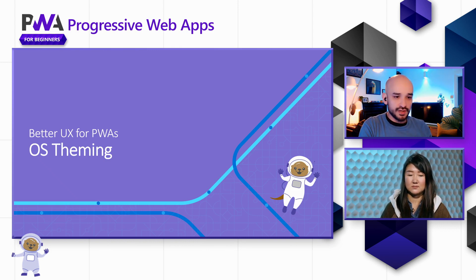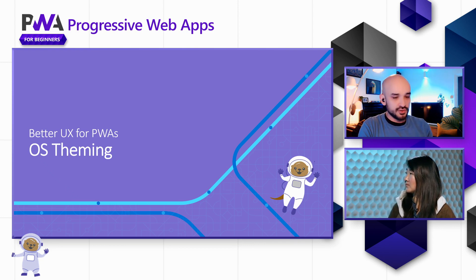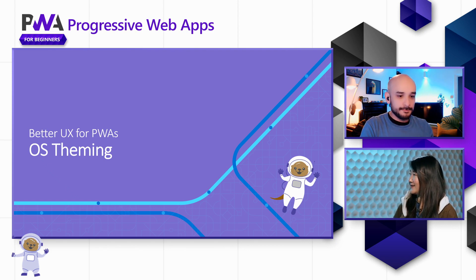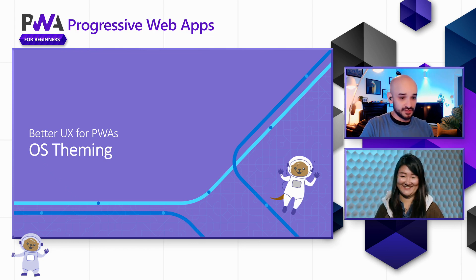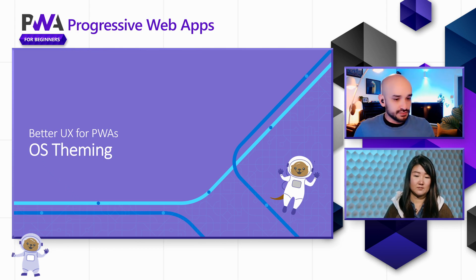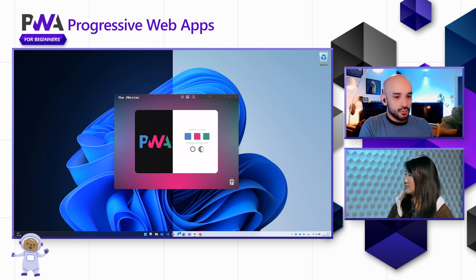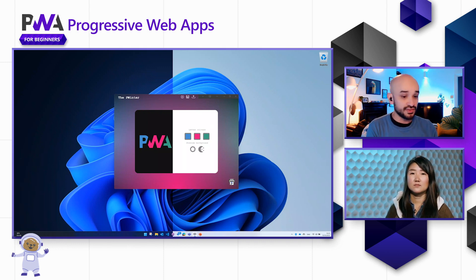We're going to continue with OS theming. This is really cool because you know how sometimes your device auto-switches to a dark mode when the sun is setting — it changes colors to protect your eyes. Modern operating systems, whether mobile or desktop, have these sort of capabilities. We can see how a PWA can adapt to the theme that the browser is on.